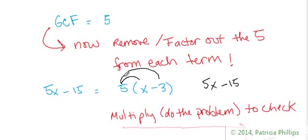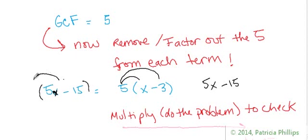Notice when you factor it out, here was the original problem: 5x minus 15. When you factor that 5 out, you're going in the reverse direction — it's like the reverse of the distributive property. You're taking it out.